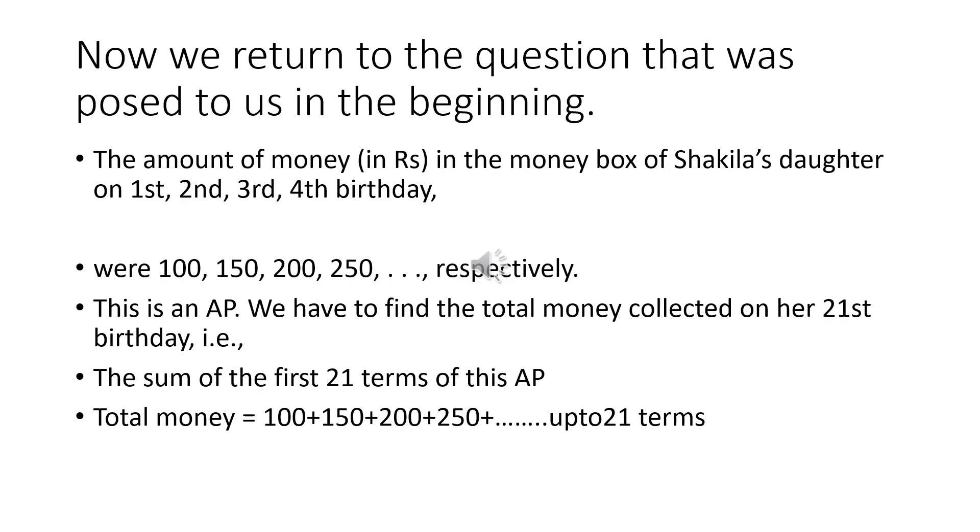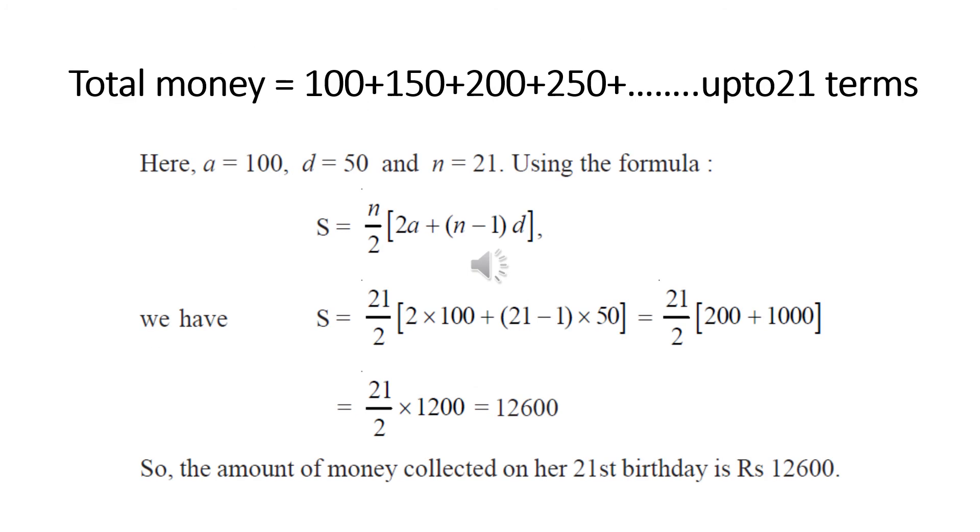Back to the question which we began with. Shakila was putting money in a money box on her daughter's birthday from her first year: 100 in the first year, 150 in the second, 200 in the third, 250 in the fourth, and till 21 years she was putting money in the money box. The question was, how much money was there after the 21st birthday? This forms an AP, so the total money will be 100 + 150 + 200 + 250 up to 21 terms.